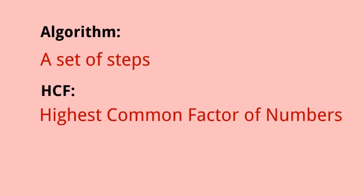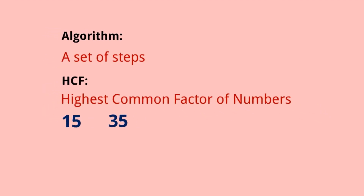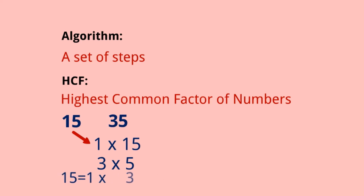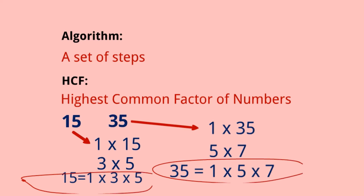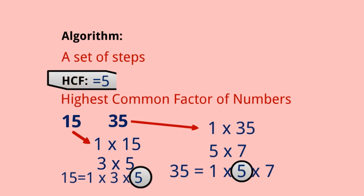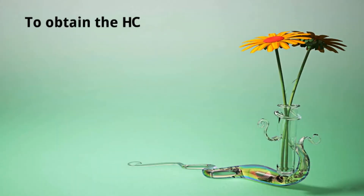To make it simplified, let us consider two numbers: 15 and 35. 15 can be factorized as 1 × 3 × 5. Similarly, 35 can be factorized as 1 × 5 × 7. If we observe 15 and 35 closely, we can see that 5 is the highest common factor, so 5 is known as the HCF.